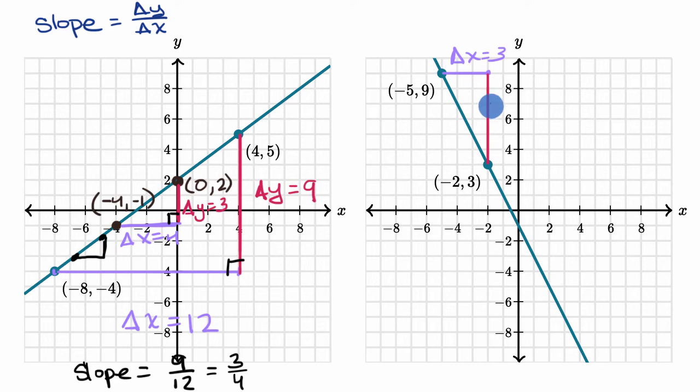It's going down by how many? It's going from y equals nine to y is equal to three. It's going down by one, two, three, four, five, six. So change in y is equal to negative six.